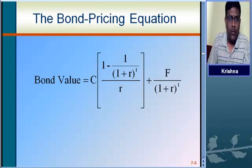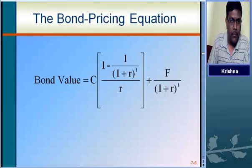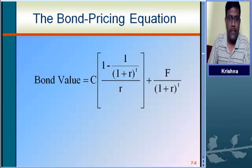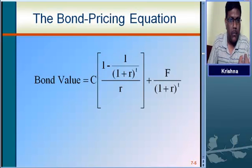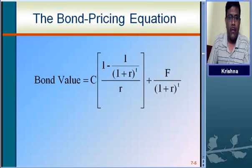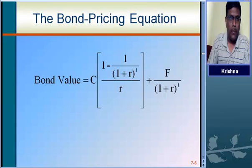This is the formula for bond valuation. C is the coupon amount — that is, the interest amount which we are going to receive from the bond. The expression [1 − 1/(1+r)^t] / r is called the present value of the annuity factor. Then, plus F divided by (1+r)^t, where F equals the lump sum we are going to receive at the time of maturity. This is discounted by r, where r is nothing but YTM. So in this formula, the YTM rate is used to discount both the annuity values and the amount received at the time of redemption.